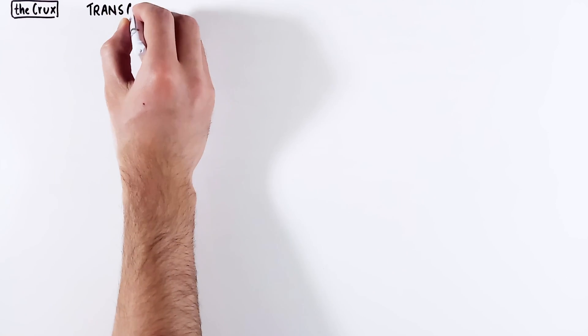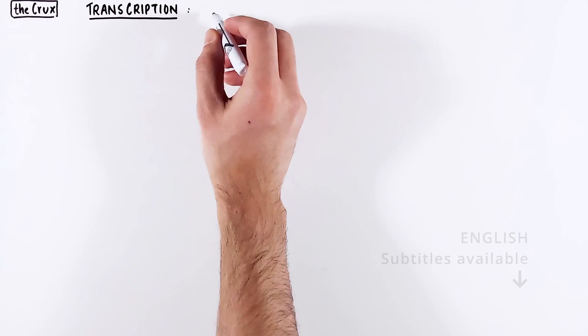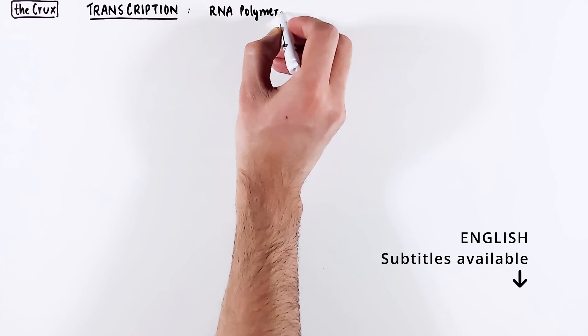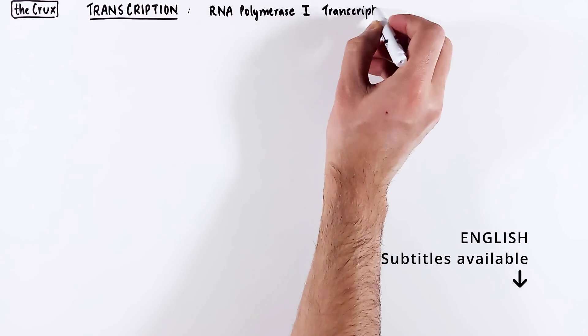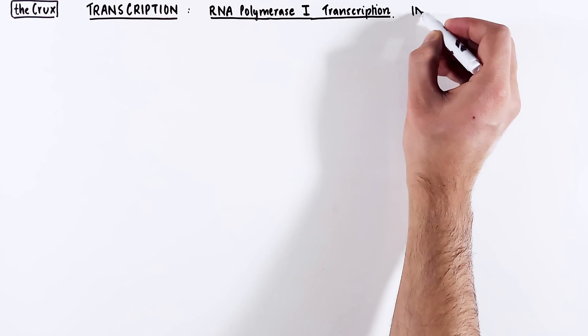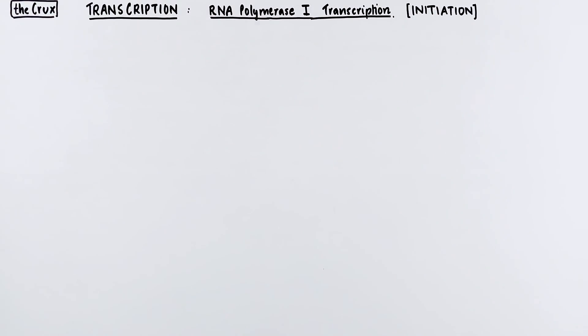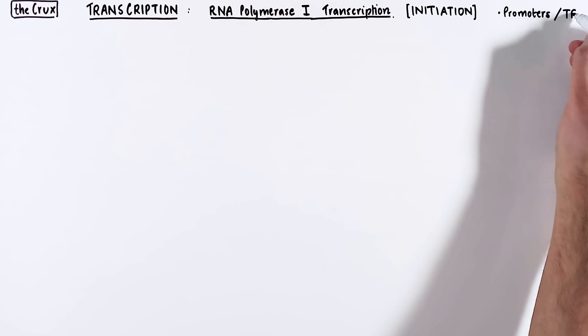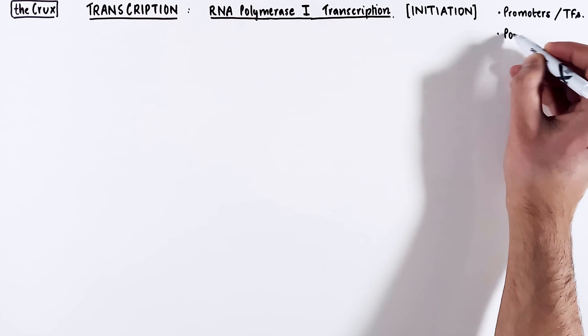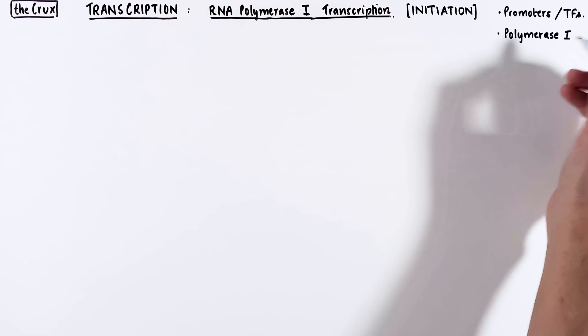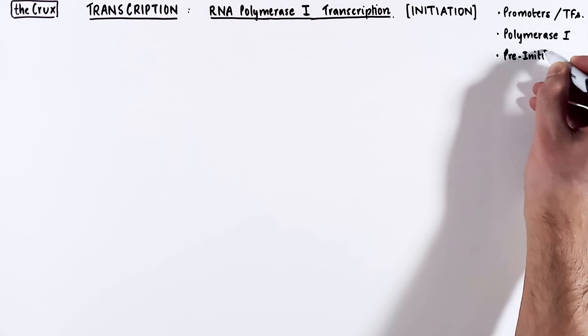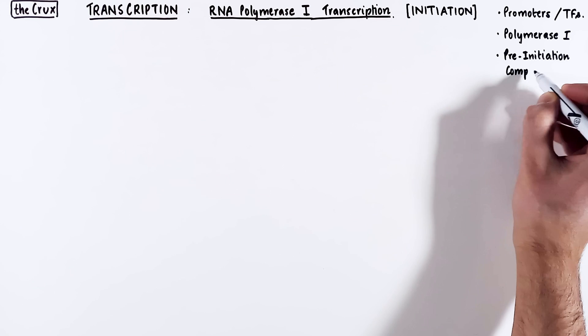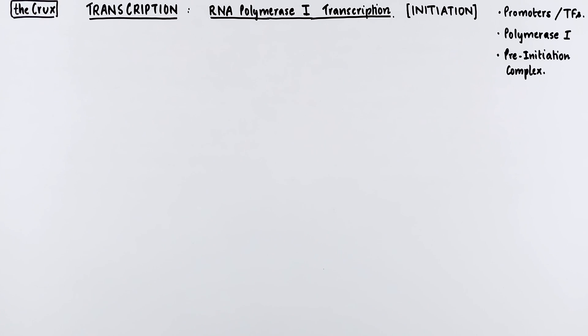We continue our discussion on transcription. In this video we are going to talk about RNA polymerase I transcription and specifically the initiation step in that process. To explain this process we'll discuss the promoters and transcription factors involved, talk about the RNA polymerase I, and finally see how all of these come together to form the pre-initiation complex.